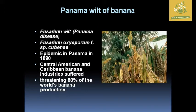Panama wilt of banana, caused by Fusarium wilt — scientific name Fusarium oxysporum f. sp. cubense — was one of the epidemics in Panama during the 1890s. The Central American and Caribbean banana industries suffered greatly due to this disease, with a threatening 80 percent of the world's banana production in those places being severely reduced.